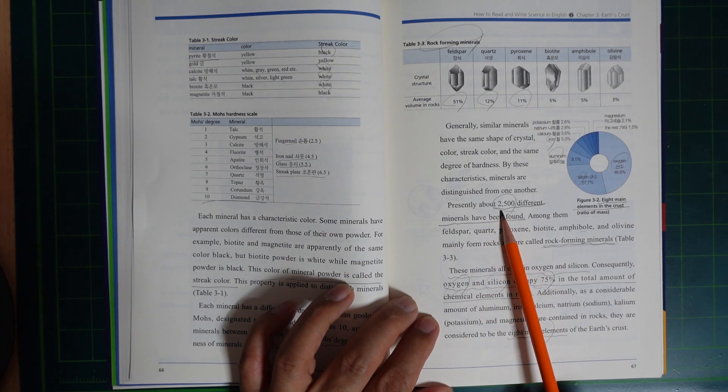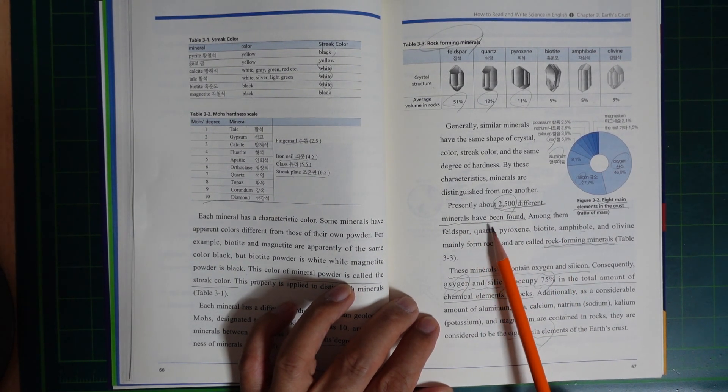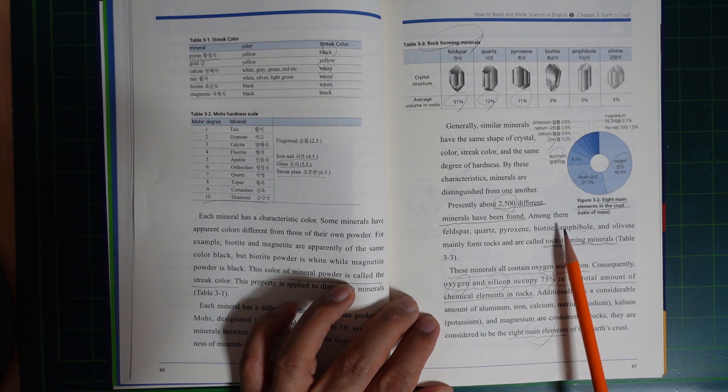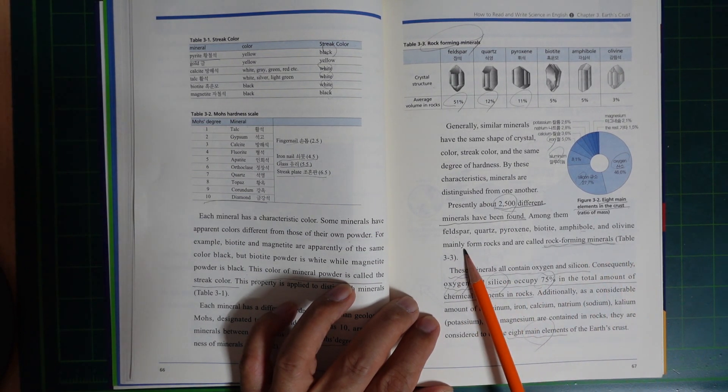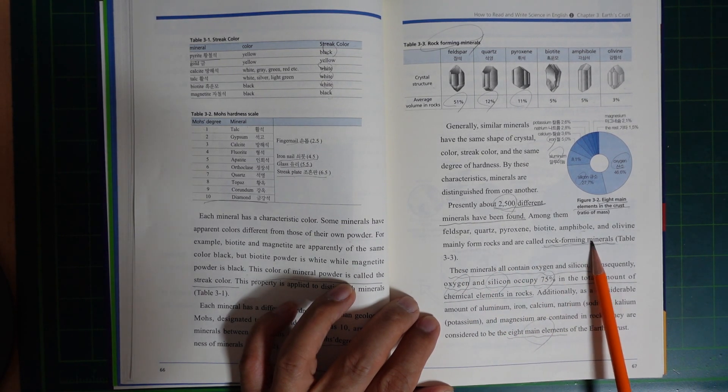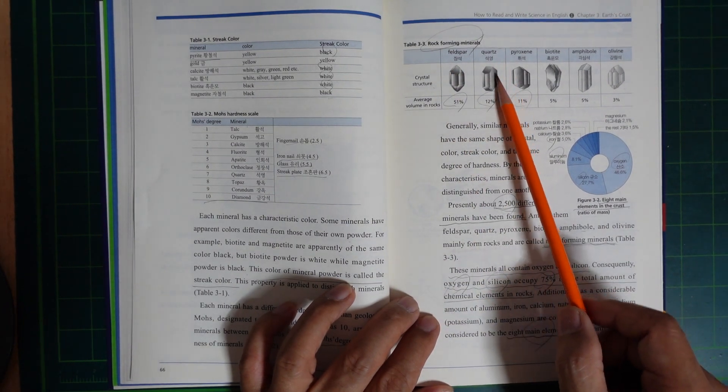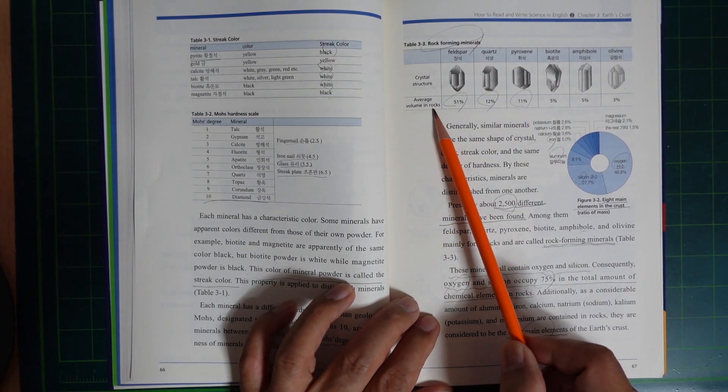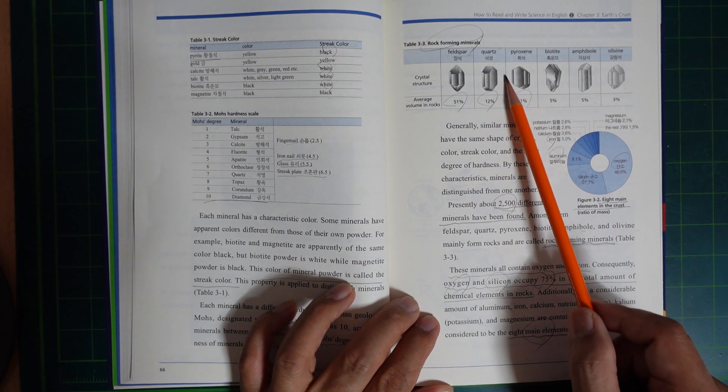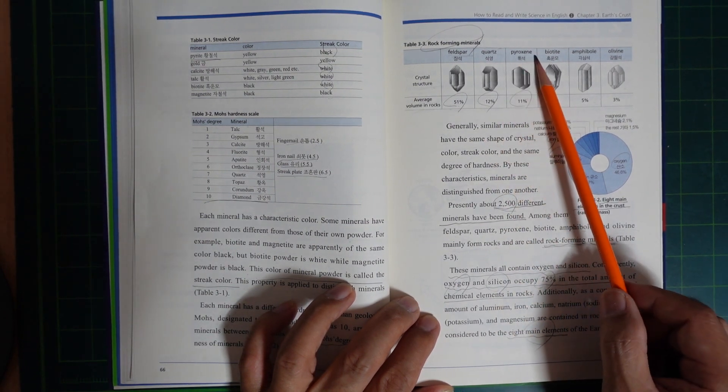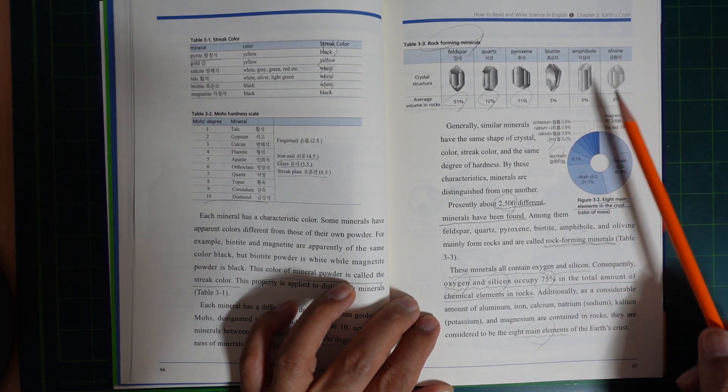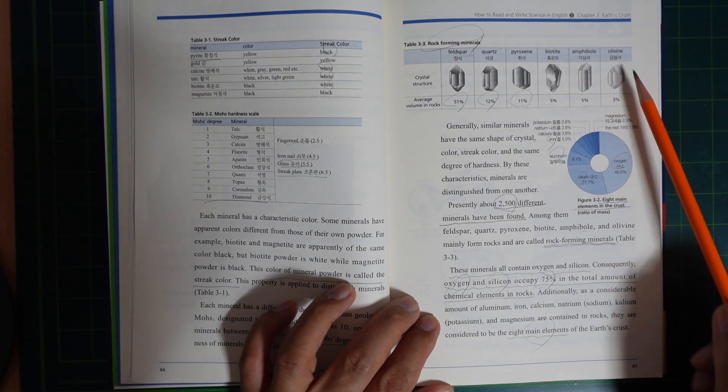Presently about 2,500 different minerals have been found. Among them, feldspar, quartz, pyroxene, biotite, amphibole, and olivine mainly form rocks and are called rock-forming minerals. Rock-forming minerals and their average volume in rock: feldspar 51%, quartz 12%, pyroxene 11%, biotite 5%, amphibole 5%, olivine 3%.